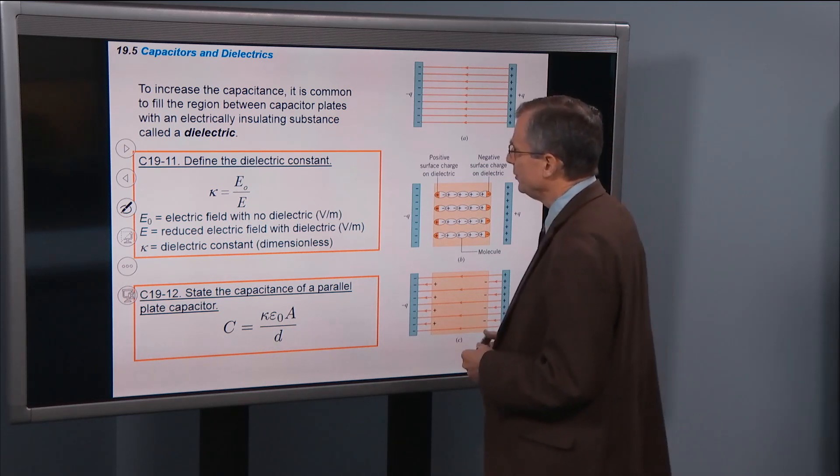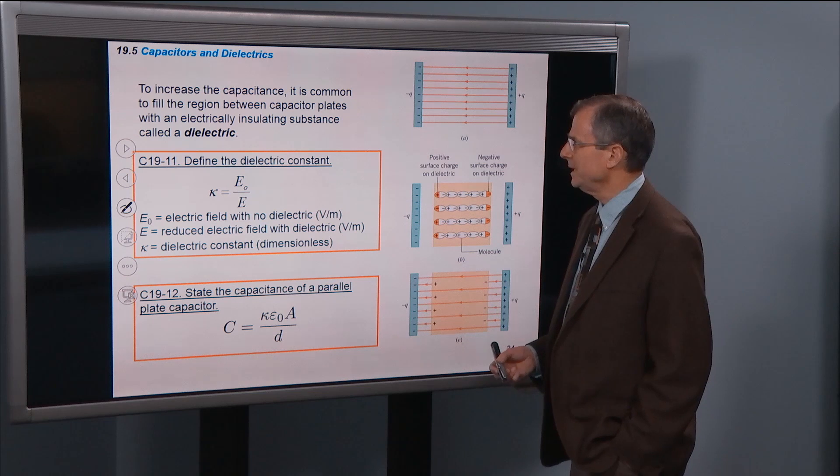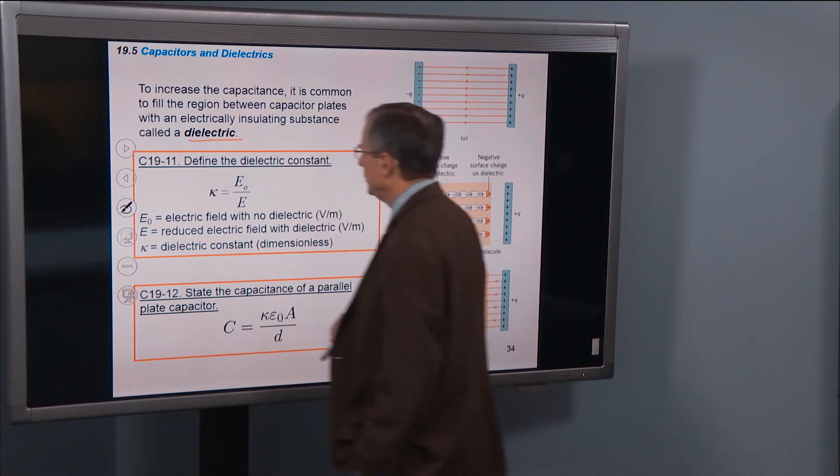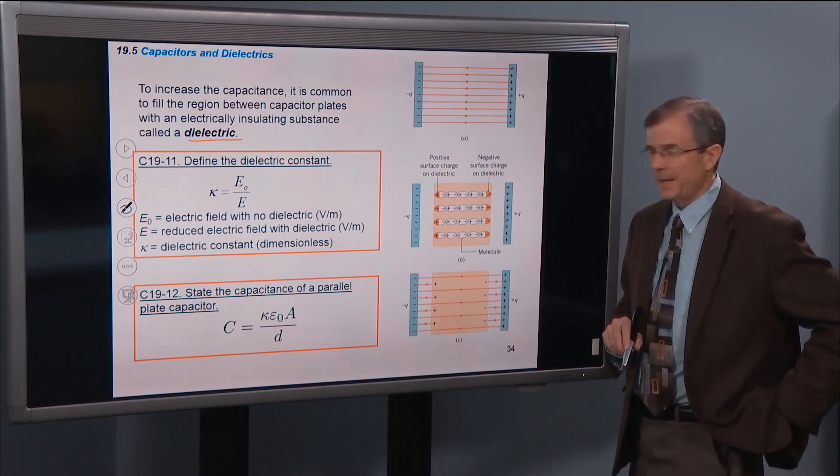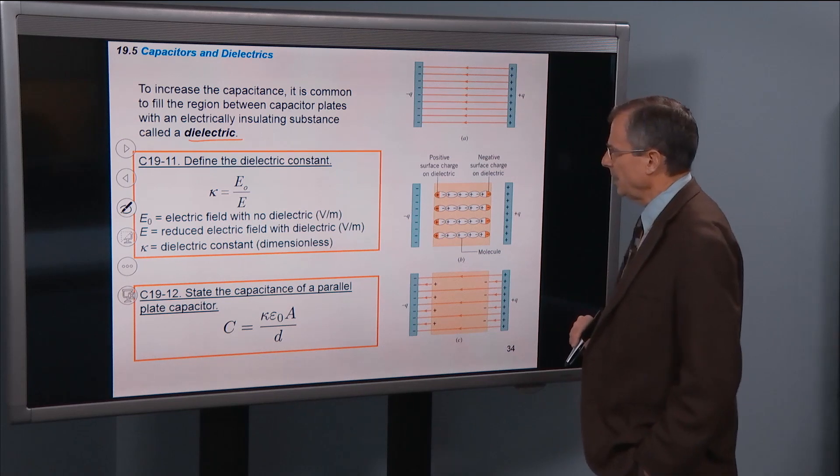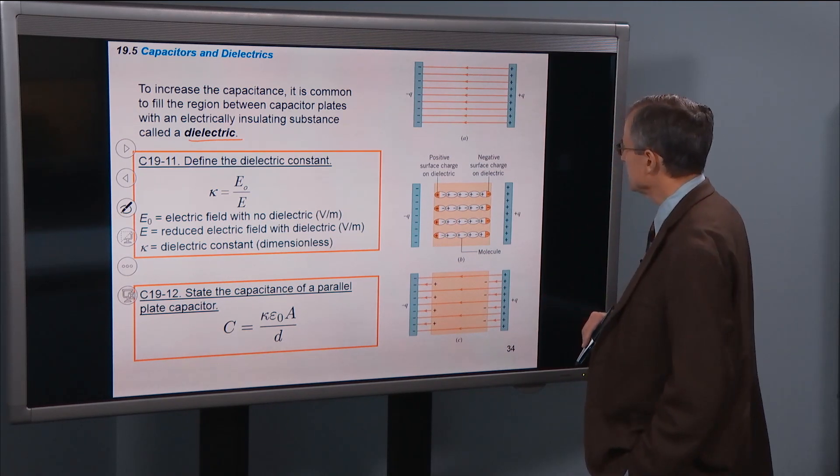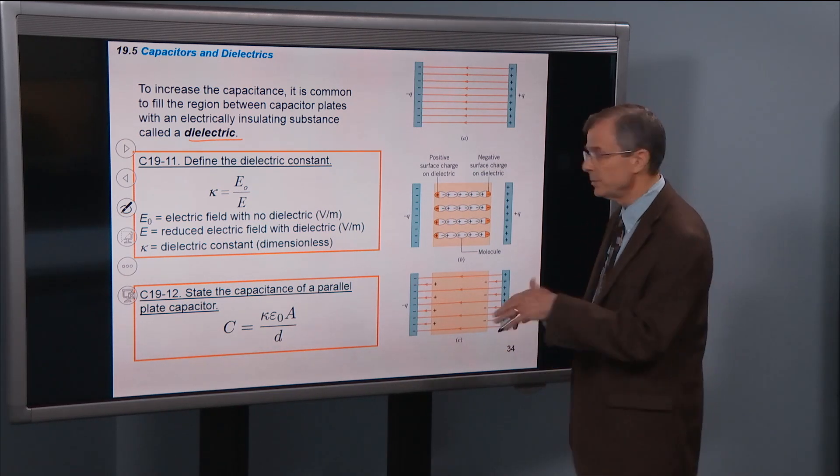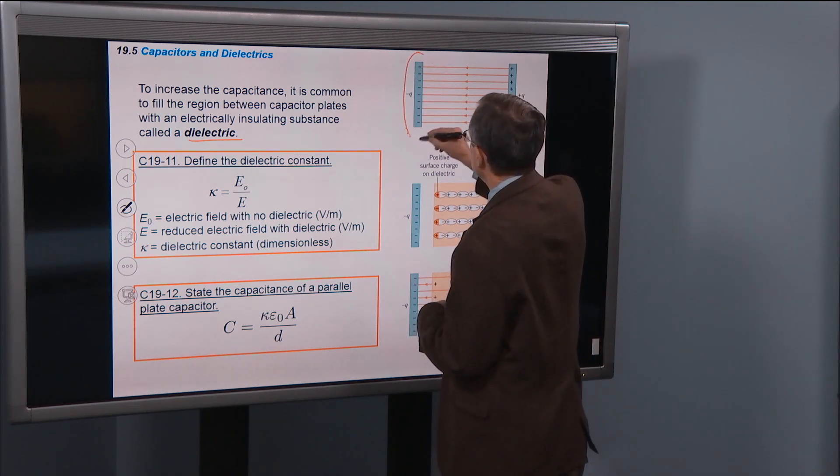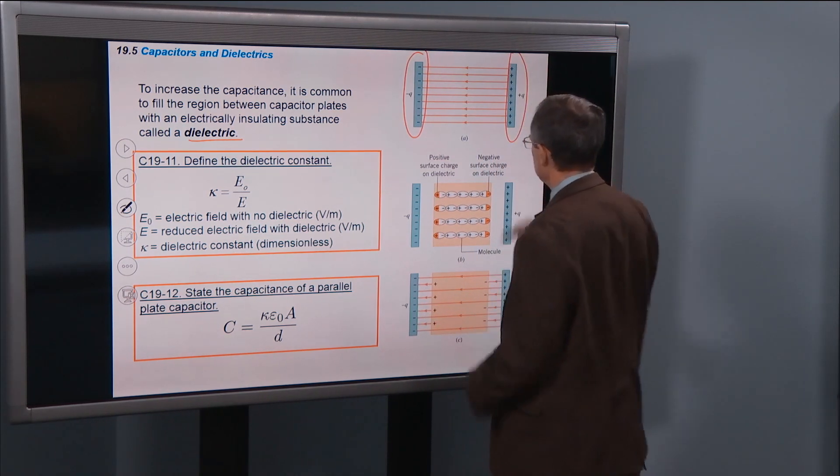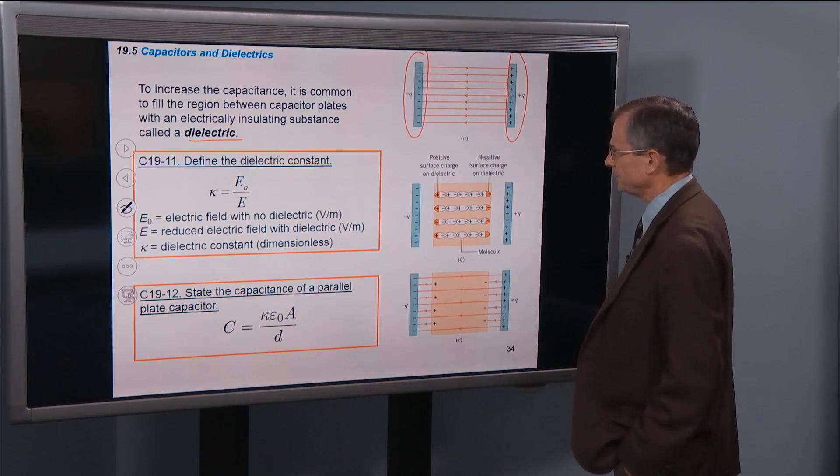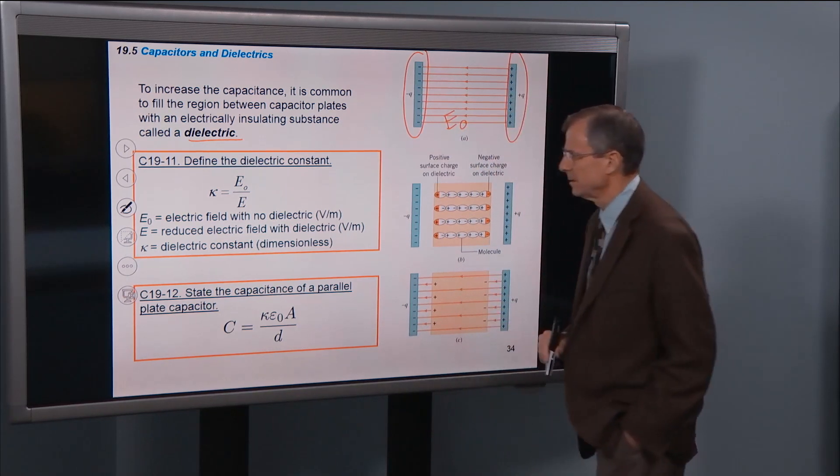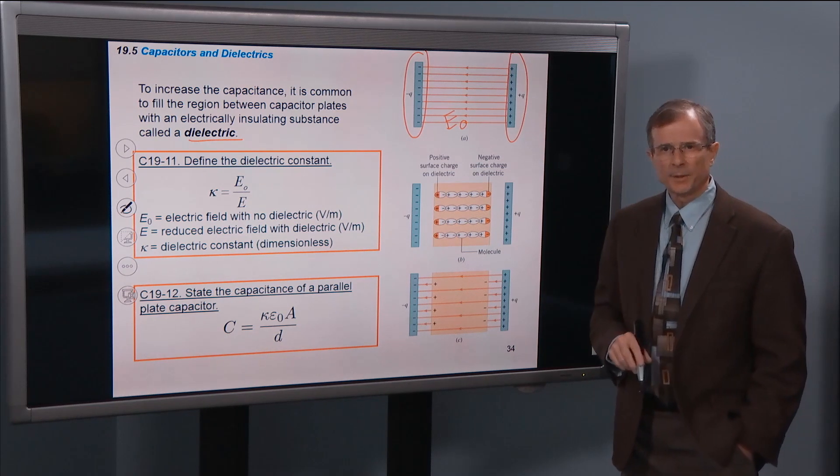To increase the capacitance, it's common to fill the region between capacitor plates with an electrically insulating substance that's called a dielectric. So we're going to first define the dielectric constant. And to do that, we need to first understand what happens when you insert that dielectric into the space between the two capacitor plates. So here's the negatively charged plate. Here's the positively charged plate. And it has an electric field, E0, with no dielectric in place.